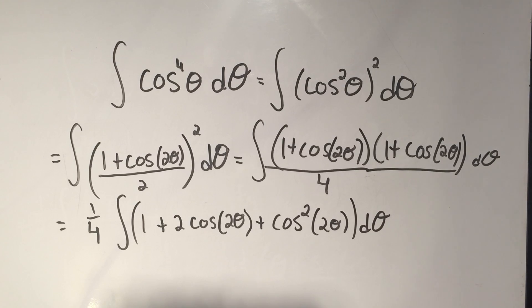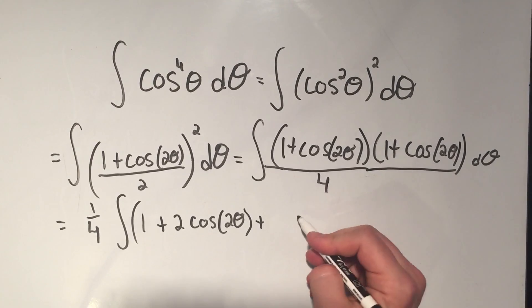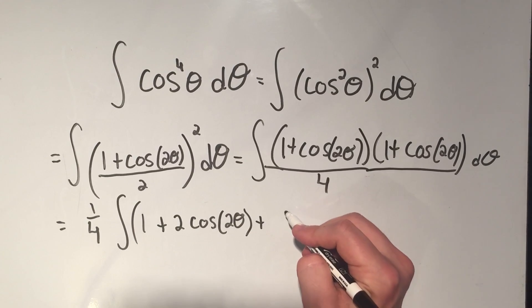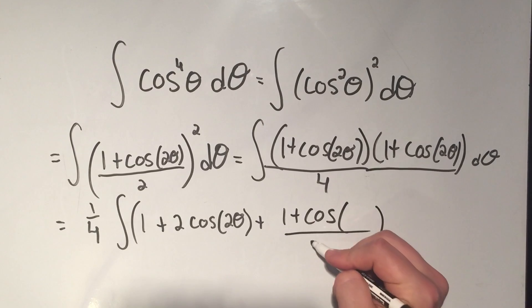And now we're almost ready. But look at this. I've got the cosine 2 theta squared again. So I need to apply that identity. Cosine squared turns into 1 plus cosine 2 theta over 2.